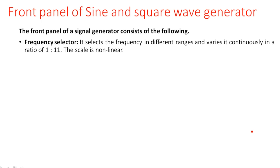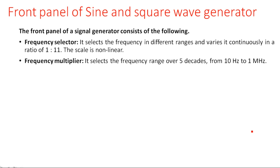For the sine and square wave generator, there are several front panel controllers. The first is the frequency selector, where frequency is selected in a ratio of 1:11 — the scale is nonlinear and different continuous signals can be generated. Another front panel control is the frequency multiplier, which selects the frequency in five decades from 10 Hz to 1 MHz.